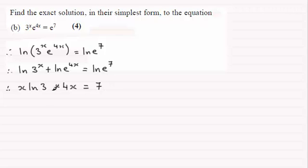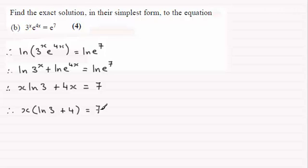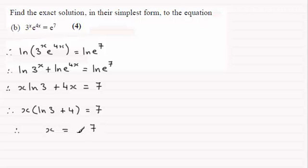I've got two terms containing x, so I pull out x as a common factor and get x times the natural log of 3 plus 4, and that equals 7. To get x, I divide both sides by natural log of 3 plus 4. I don't quite like the look of natural log of 3 plus 4 because it could be mistaken for natural log of 7, so I'll just turn that round and write it as 7 divided by 4 plus natural log of 3. That's my answer — that's one way of approaching this.